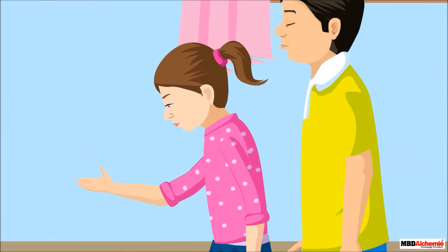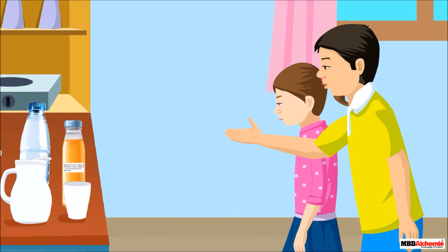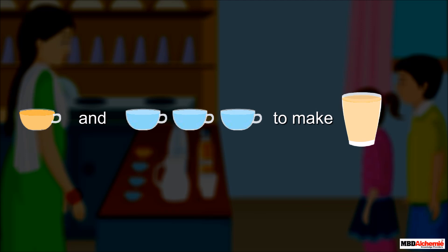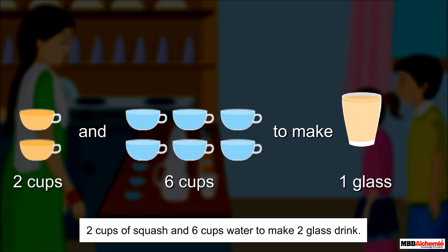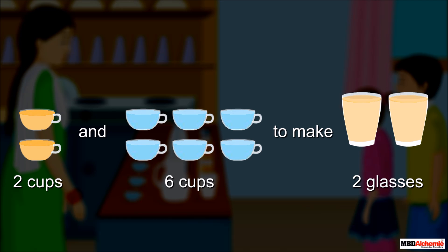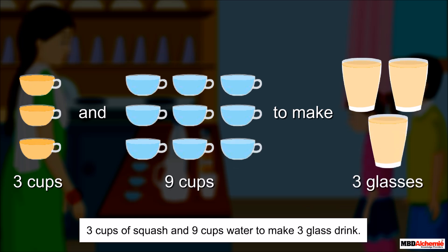Mommy, please make one drink for me too! Now, how will you add the squash and water to make drinks for both of us? To make it for one person, take one cup of squash and three cups of water. For two persons, double the quantities — that means two cups of squash and six cups of water. For three persons, take three cups of squash and nine cups of water.